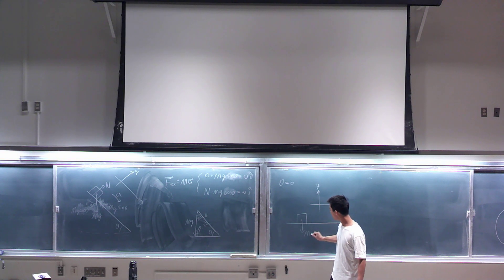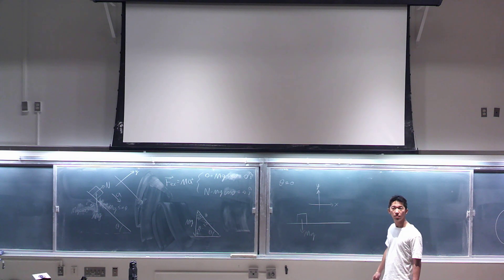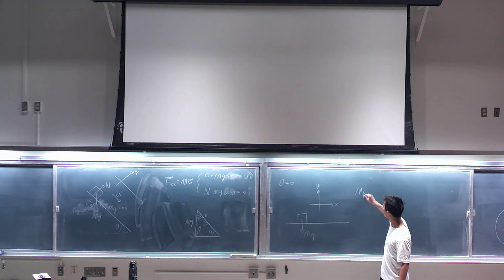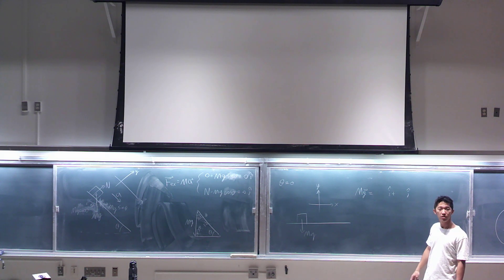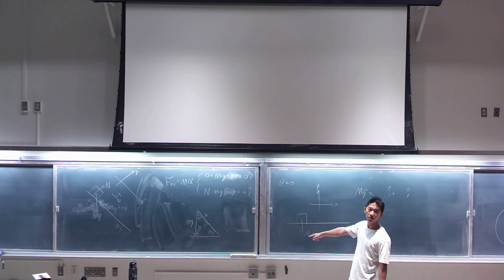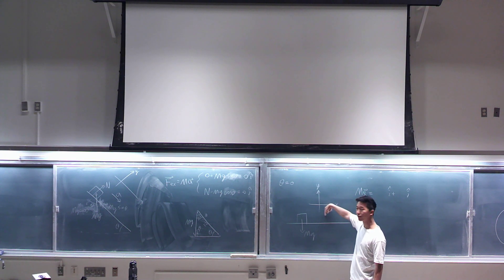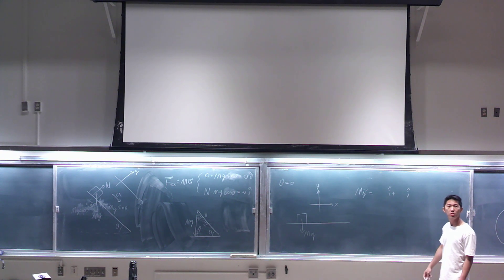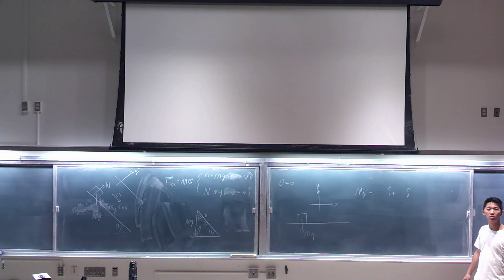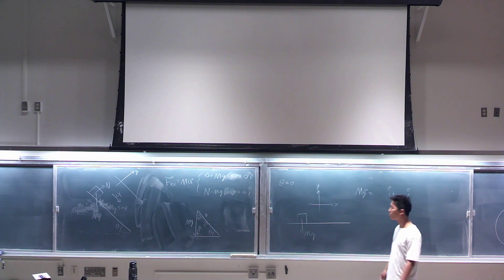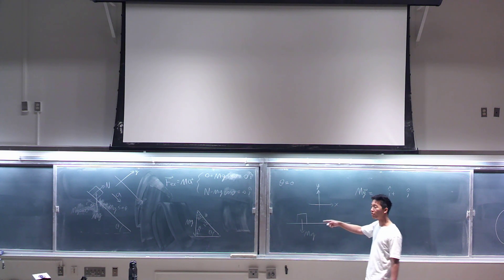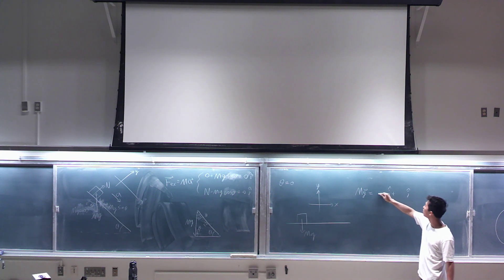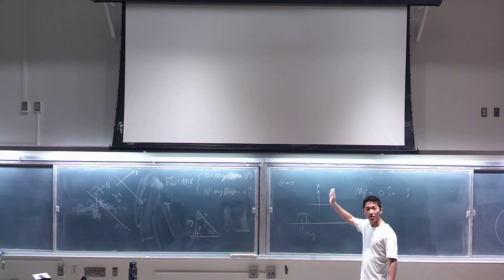What is the y-component of gravity in this case? Gravity is always going down — it's always going down. Y is the longest direction, it's pointing in the negative y, so the y-component of gravity is in the negative y direction. What is the x-component of gravity? The y-component of gravity is going down, which is negative y.